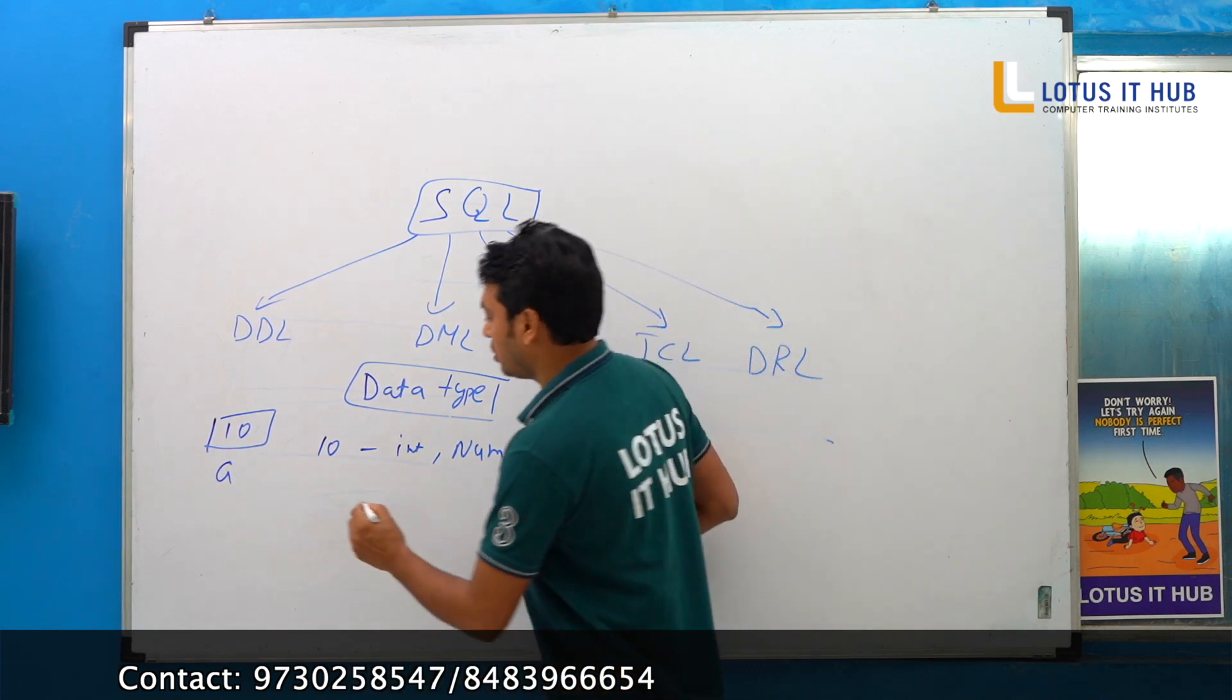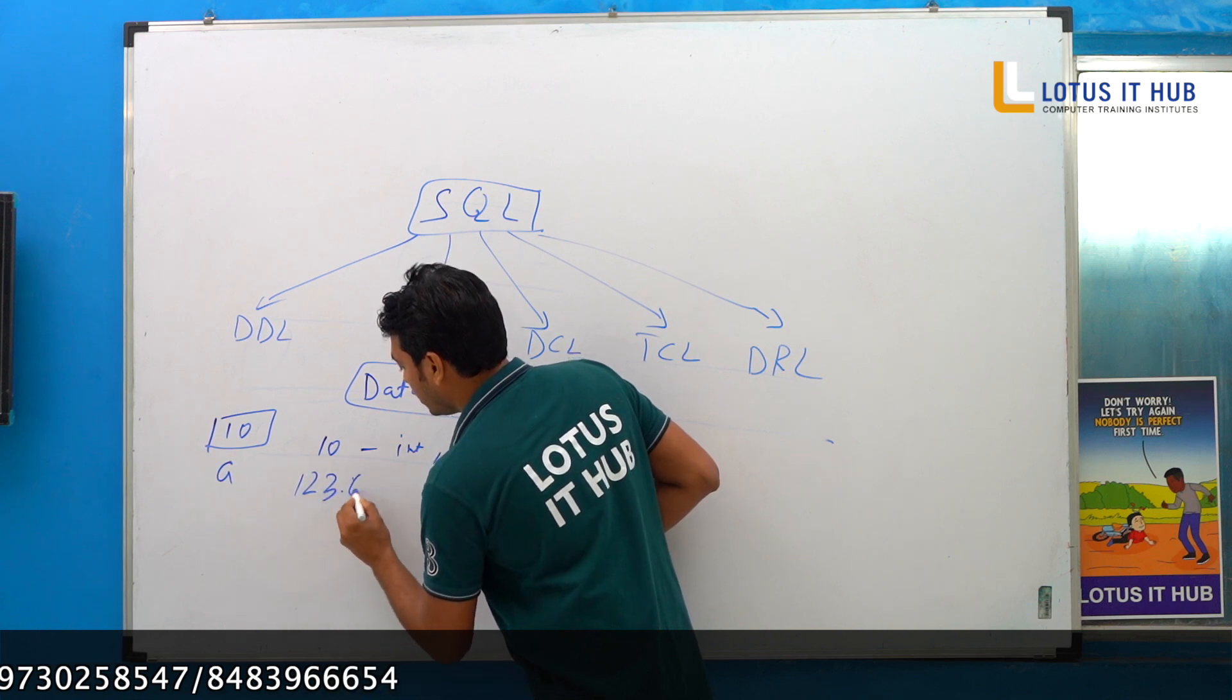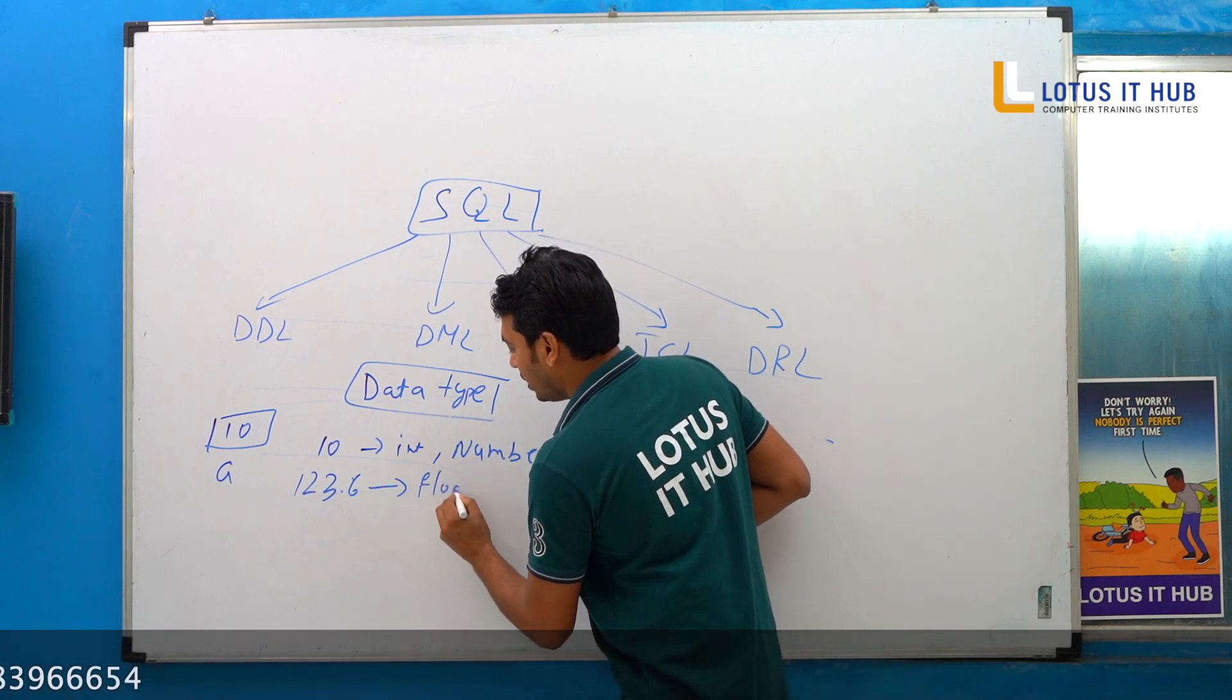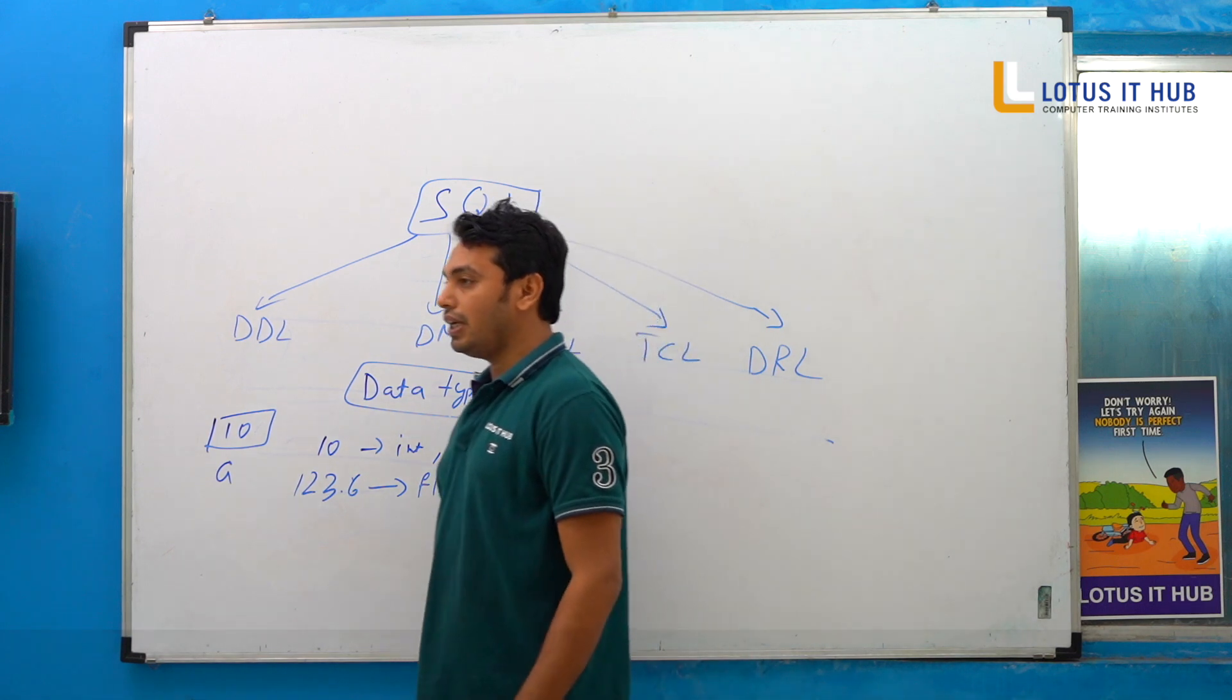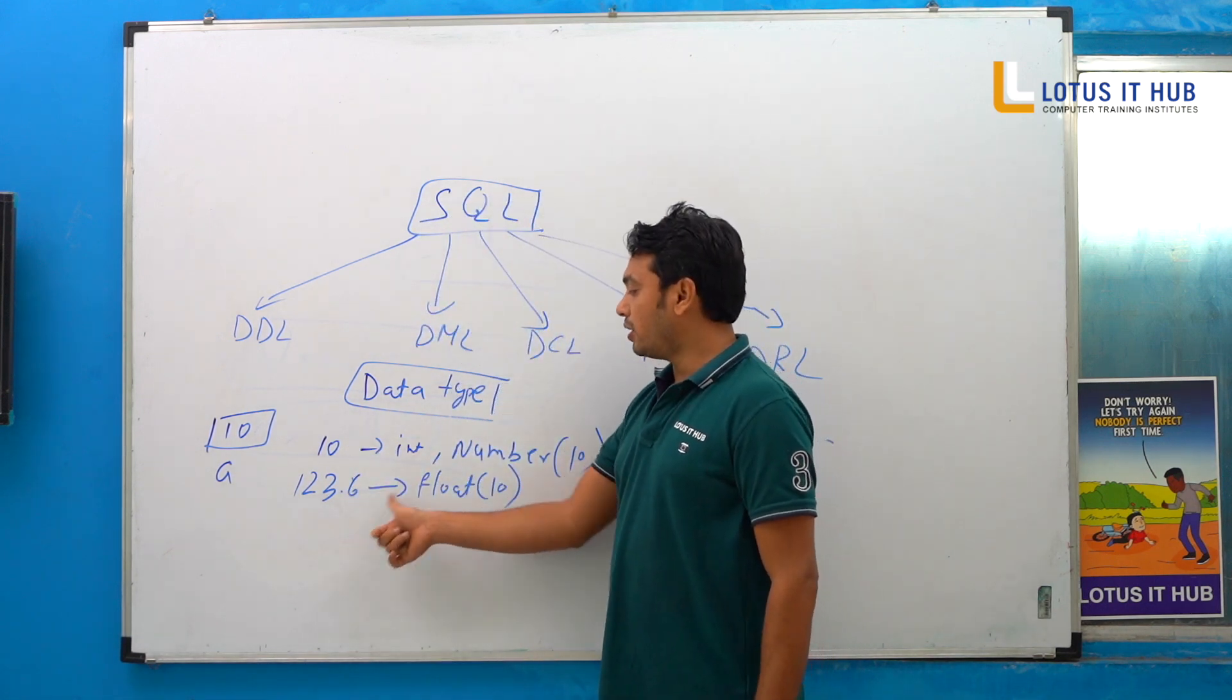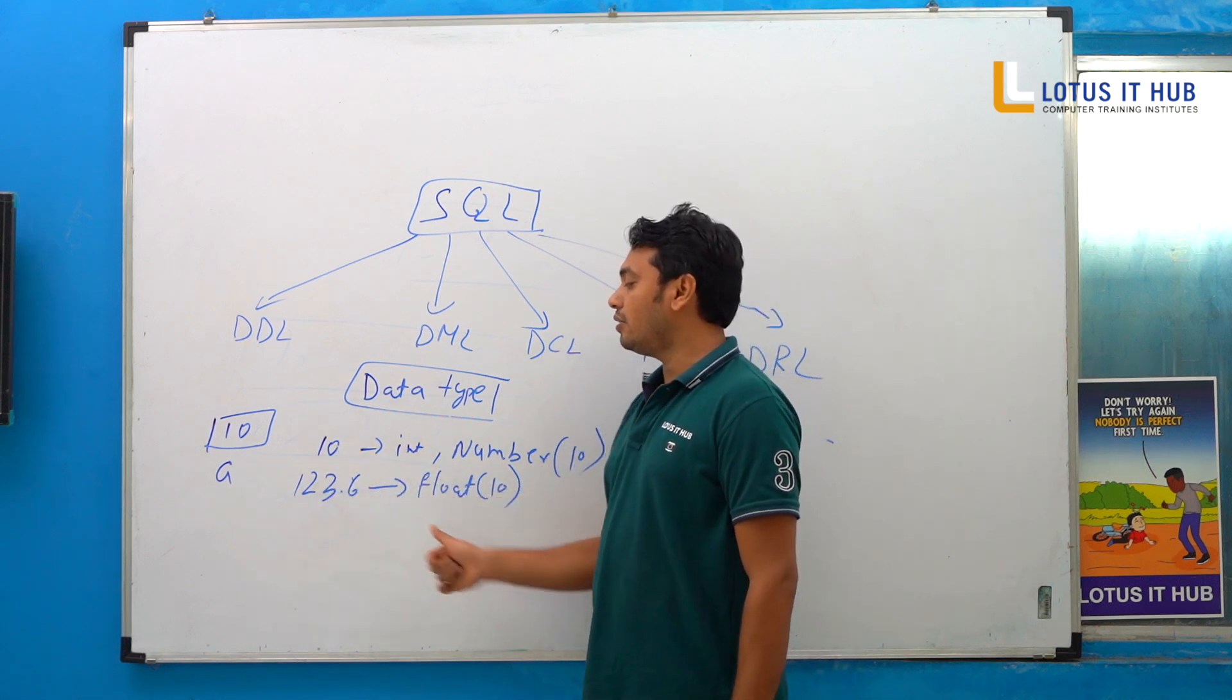Suppose if I want to store a decimal number, 123.6, where we can store? Float data type. We can use float data type. Is it clear? What have we done? If you want to store this, then use this. This is mainly used for ID and such.